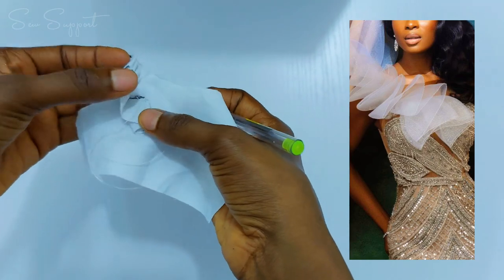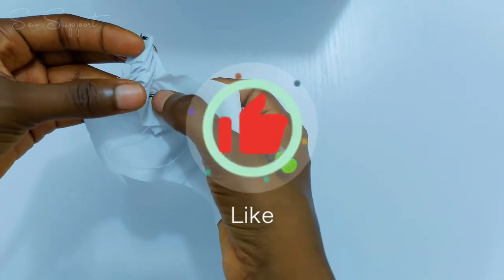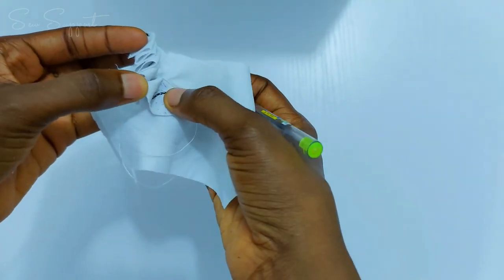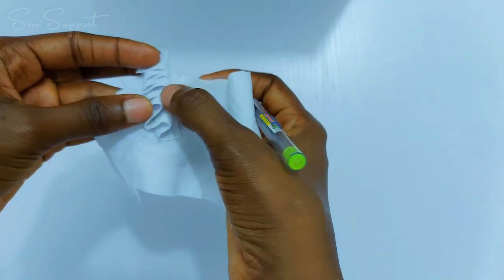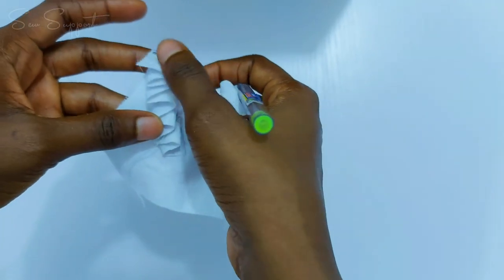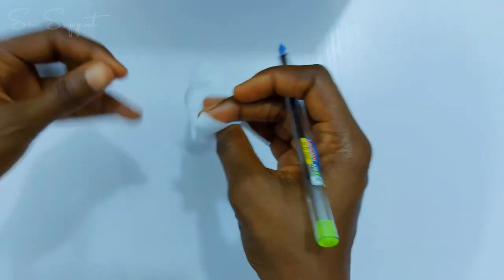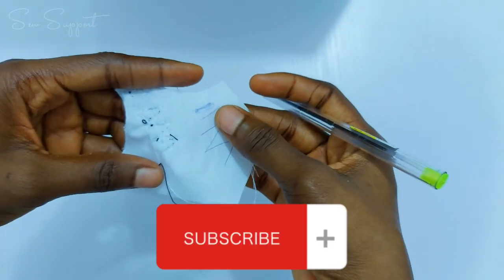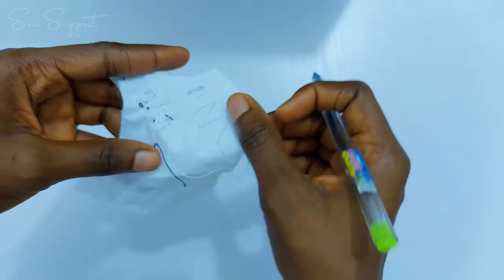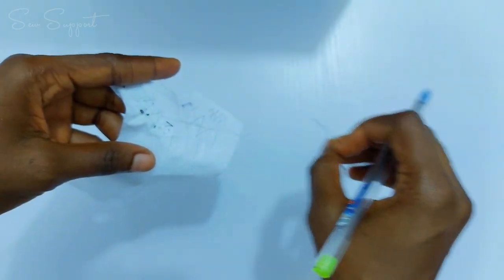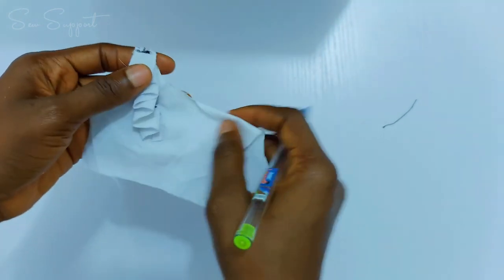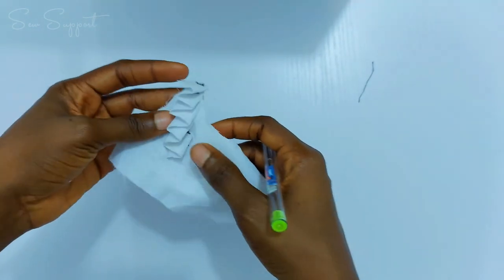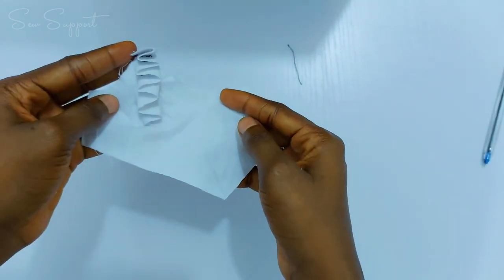When you're sewing this, sew very tiny, less than a quarter of an inch, really really tiny. Like I said you start from the bottom and work your way all the way to the top. It would be preferable to do this before you turn with your lining so that this whole mess does not show on the lining. But if you can't, you can wait till you've turned with the lining before you do all this. So that's the basic thing.